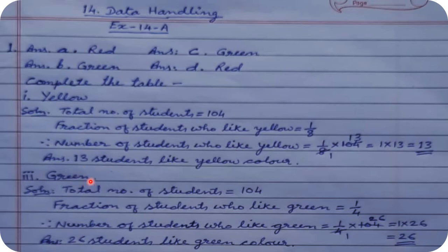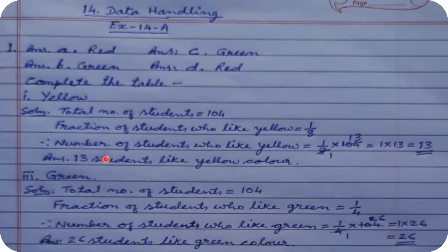Now for green: total students are 104. The fraction of students who like green is 1/4, because green covers one part out of four equal parts of the whole circle. Number of students who like green = 1/4 of 104 = 26. Hence 26 students like green.